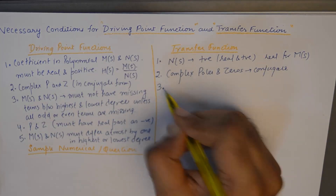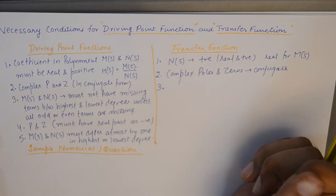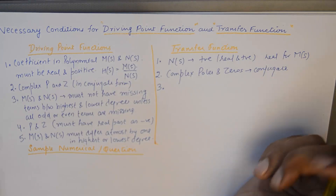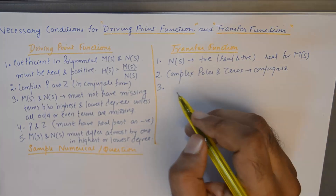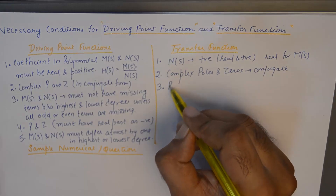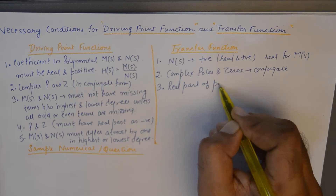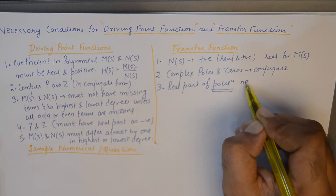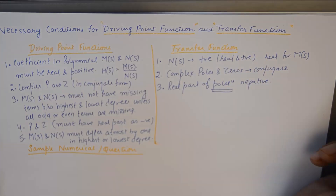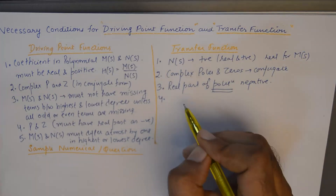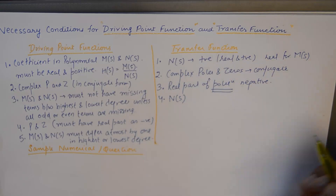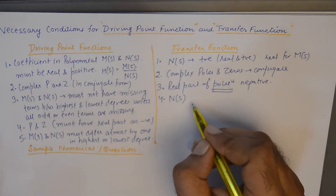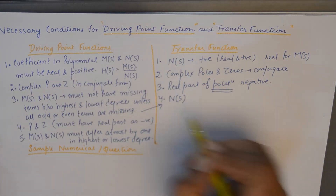The third condition is that the real part of poles must be negative. If it is zero, then it must be a simple pole. The fourth condition is that polynomial N(s) must not have any missing term between the highest and lowest degree, unless all the odd and even terms are missing. This condition applies to N(s) only.